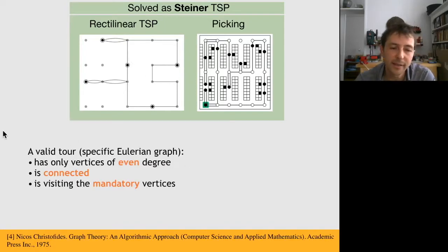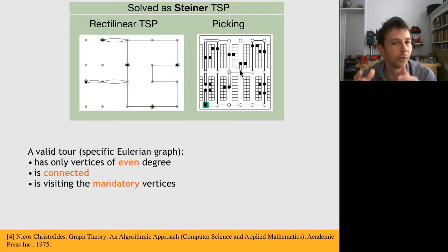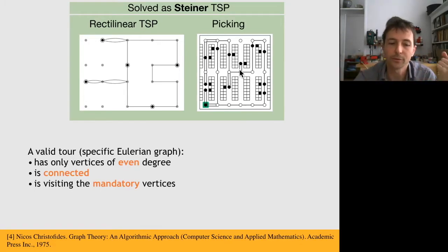It simply says that a valid tour has only vertices of even degree. For instance, this vertex has degree 2, this one has degree 4. Similarly here, a degree 2 and a degree 4. You could have a degree 6 or 8, but a valid tour has only vertices of even degree.